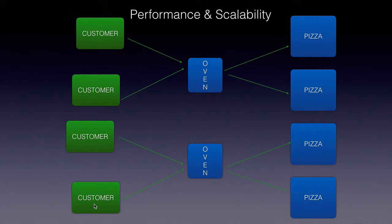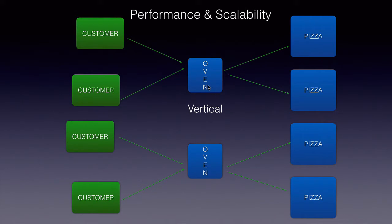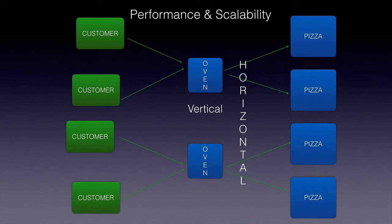There are two types of scaling. Number one, vertical scaling, wherein we'll be continuing using just one oven or whatever setup we have, but we'll increase the capacity of it — we'll make it bigger or enhance the heat settings of the oven so that it can cater to the growing number of customers. Horizontal scaling is where we'll be bringing in more ovens.